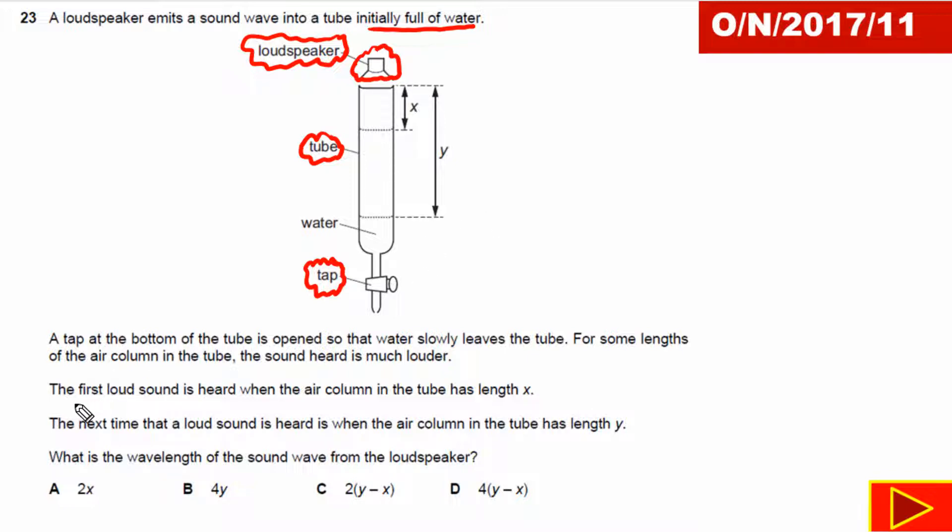It is given to us the first loud sound is heard when air column length is equal to x. We hear first harmonic, or we can say that is first loud sound. We can also say this is when first time resonance takes place.